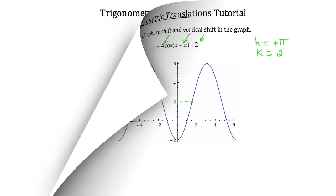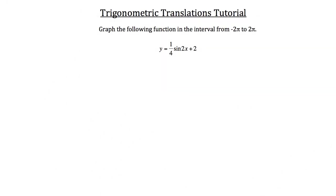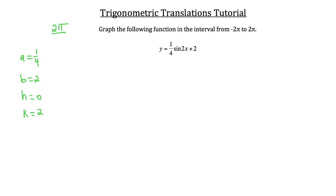Next problem: graph y = ¼·sin(2x) + 2 in the interval from -2π to 2π. Here, a = ¼, b = 2. Since there's nothing wrapped with x in parentheses, h = 0. The k value at the end gives k = 2. The period is 2π/b = 2π/2 = π, so one complete cycle occurs every π units.